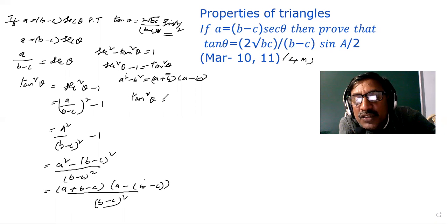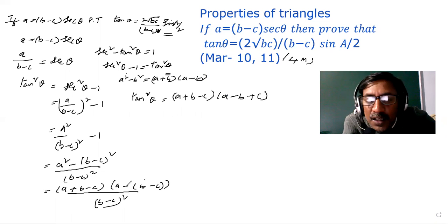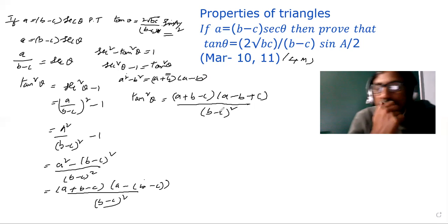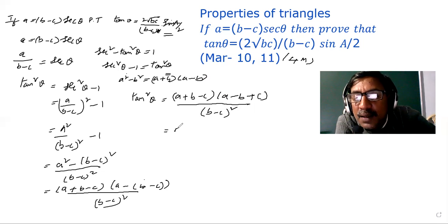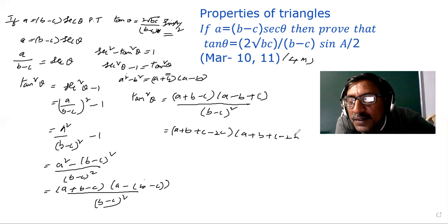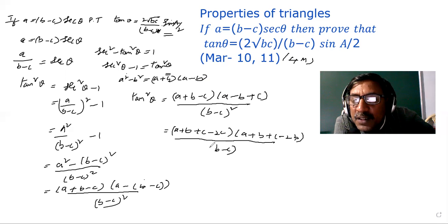So tan squared theta equals [a plus (b minus c)] into [a minus (b minus c)], divided by (b minus c) whole square. That is, (a plus b minus c) into (a minus b plus c), divided by (b minus c) whole square. Now applying a plus b plus c equals 2s: (a plus b minus c) becomes 2s minus 2c, and (a minus b plus c) becomes 2s minus 2b.